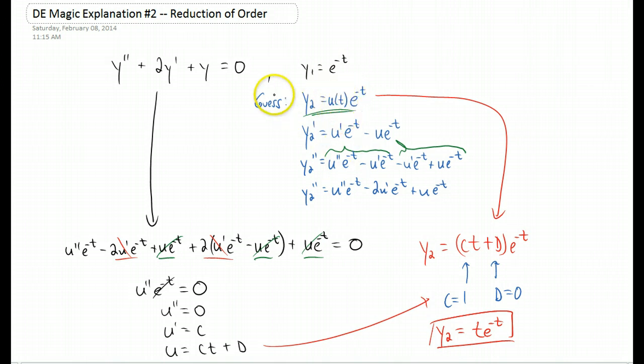So we take derivatives, we plug those derivatives into the DE, and we figure out what u has to be, and that gives us y2. And typically we can make a simplification where these constants don't really matter, so we make them as simple as we possibly can.